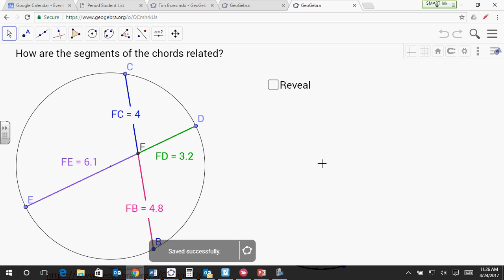What if we try multiplying... 6.1 times 3.2. Someone try and multiply that one for me. 19.2. And the other one's 19.2. So we might be on to something here. Let's move it a little bit and see if that still works.